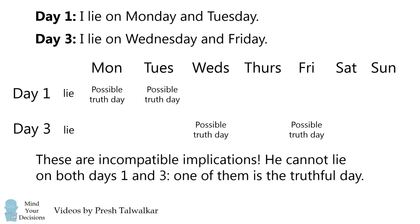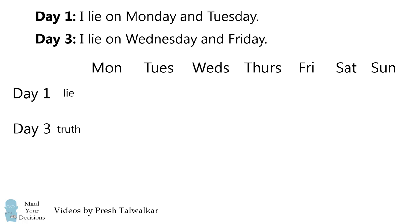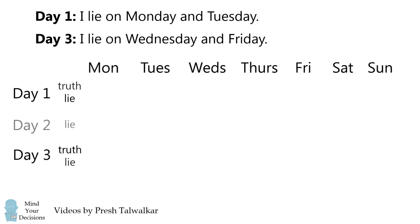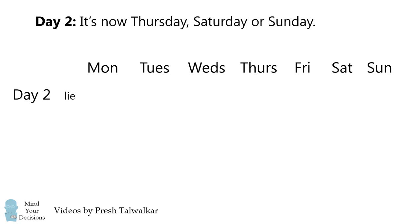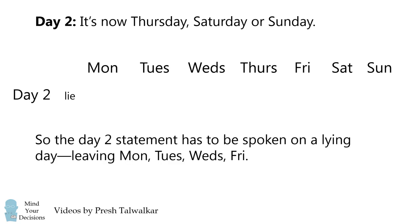Therefore, the thief cannot lie on both days 1 and 3. One of these statements has to be the truthful day. So, either the thief is telling the truth on day 1 and lying on day 3, or vice versa. Furthermore, since the thief has to be telling the truth on day 1 or day 3, that means we know the thief is lying on day 2. This is because there's only one truthful day in the week, which is either day 1 or day 3. So, what do we get knowing that day 2 has to be a lie? The statement on day 2 is that it's now Thursday, Saturday, or Sunday. If this statement was made on a Thursday, Saturday, or Sunday, then it would be a true statement. But the thief has to be lying, so this statement has to be made on a lying day, which is Monday, Tuesday, Wednesday, or Friday.